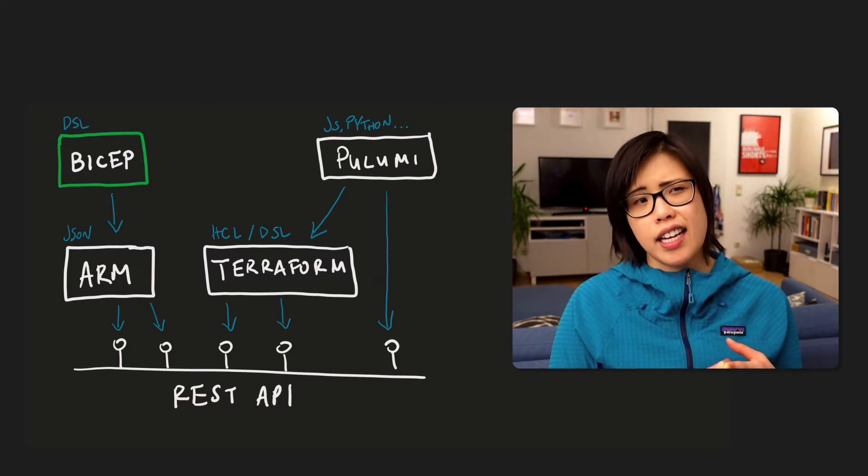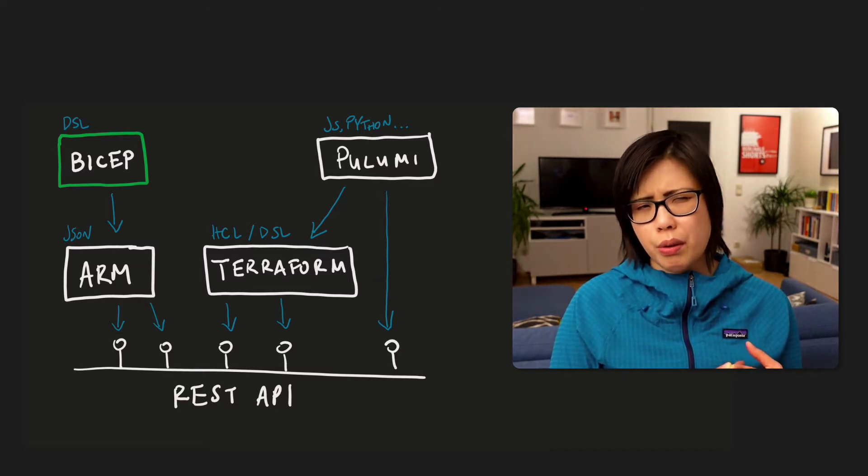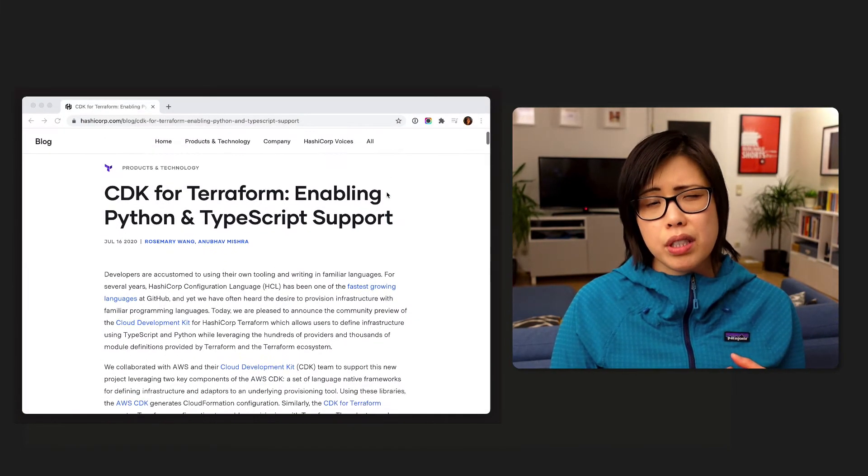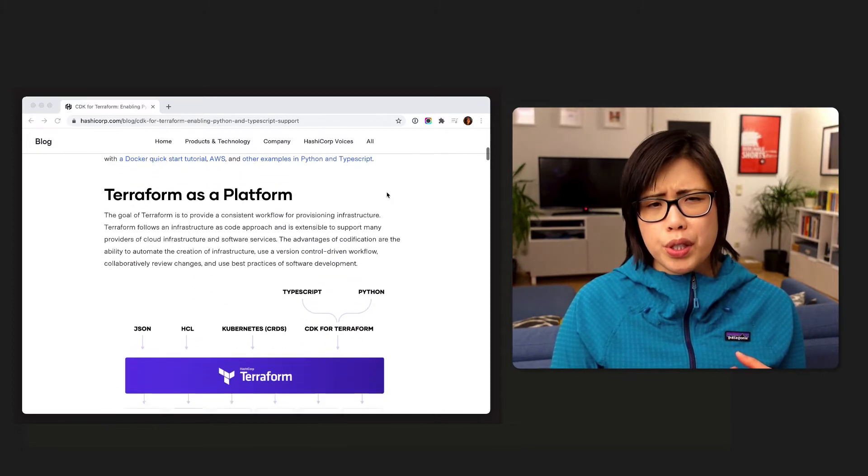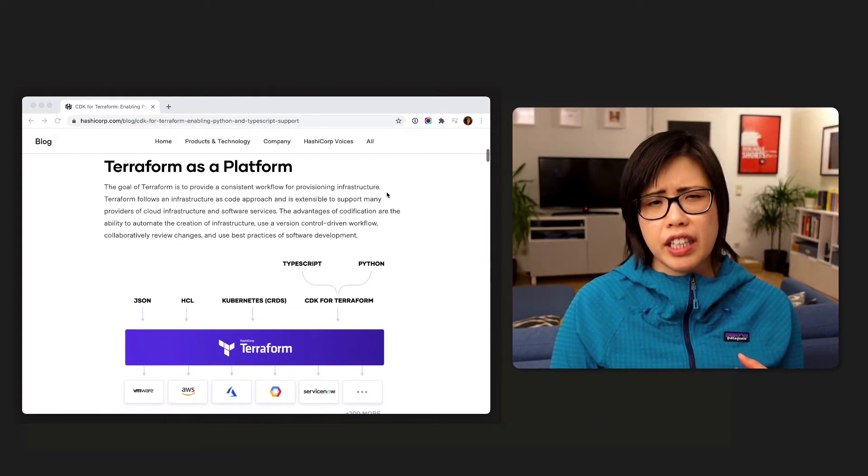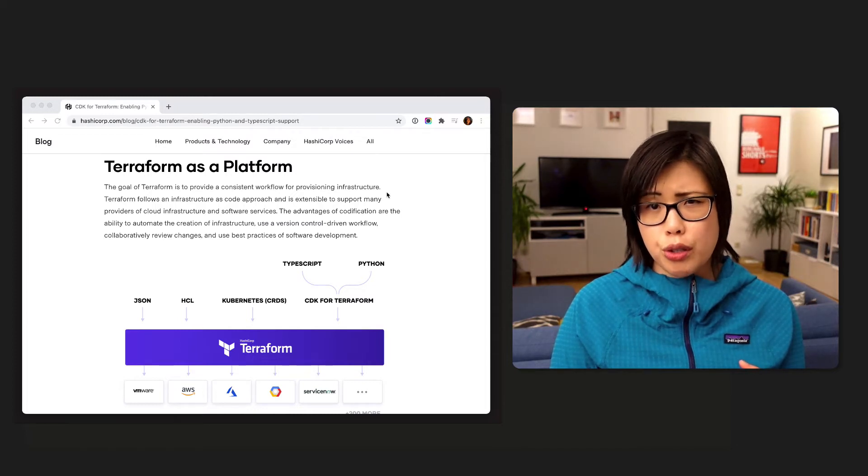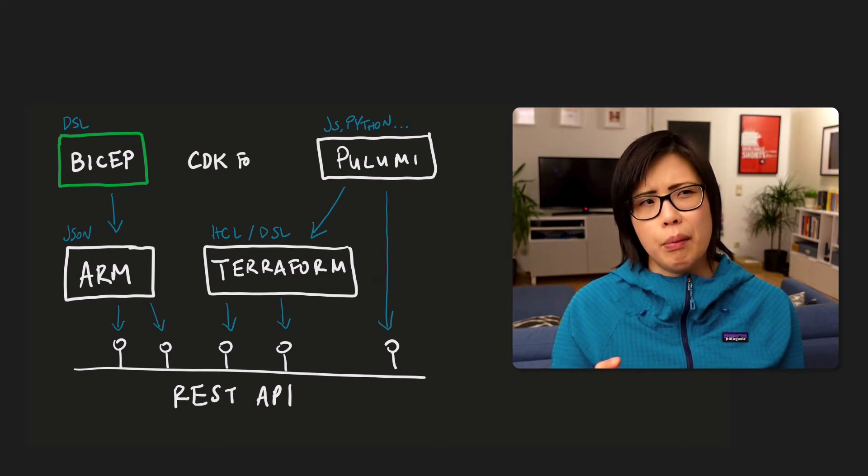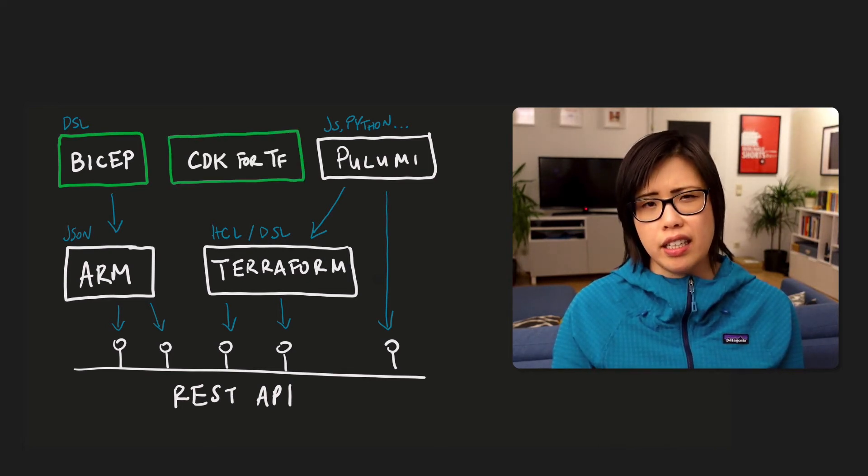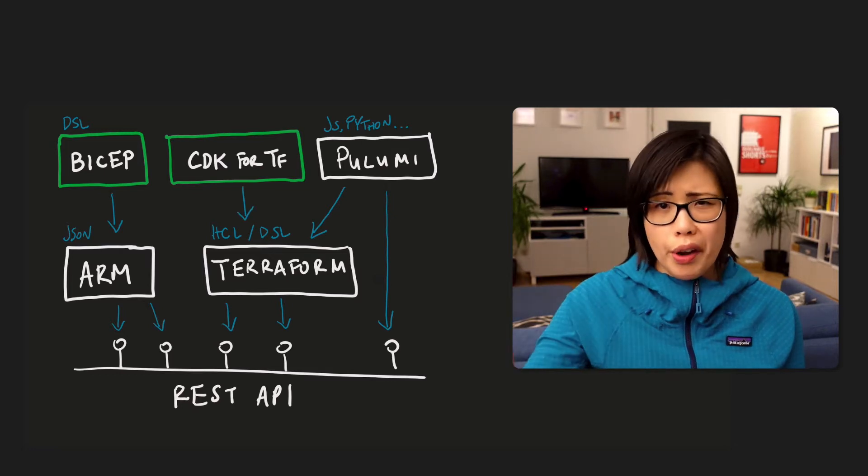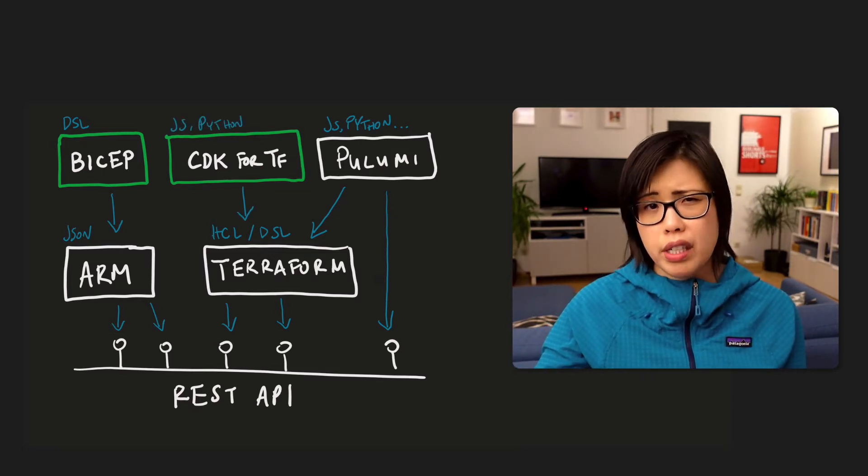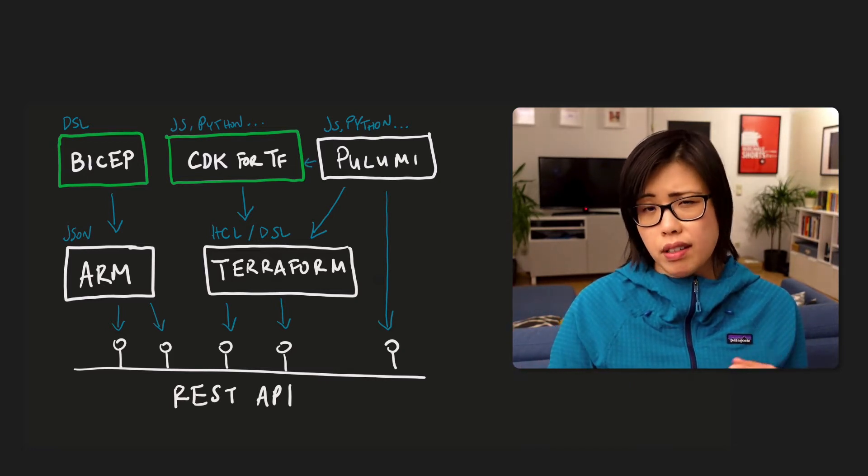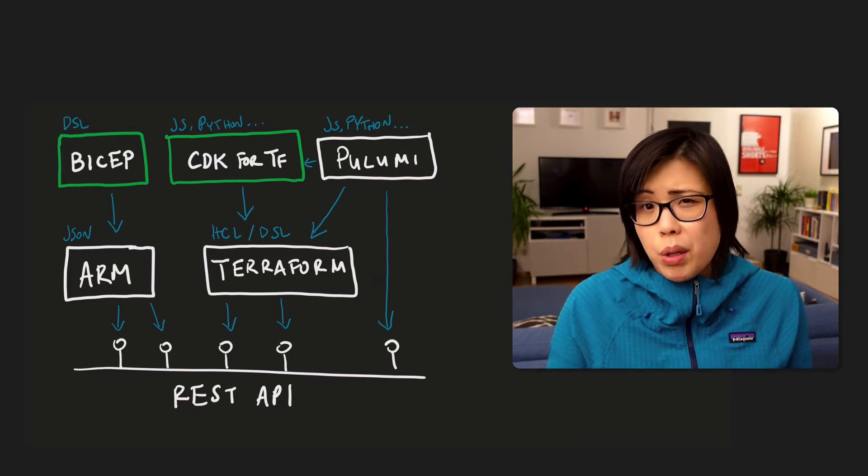An interesting thing is that last year, last summer 2020, Terraform or rather HashiCorp announced that they're going to jump on the code native train. So they released the code development kit for Terraform, which basically lets people create infrastructure using JavaScript and Python. So I think this is in preview or alpha or something. But the point is that the companies have really indicated they are going to where the users are, what the users want. And if enough people say we want this, then the incumbents like Microsoft or HashiCorp will accommodate to that.